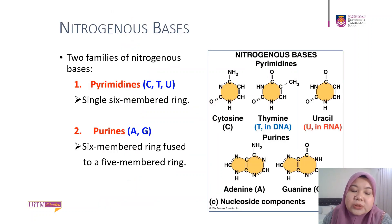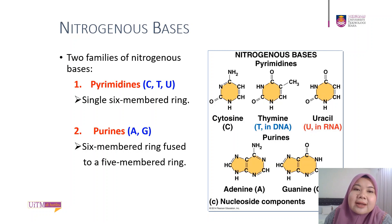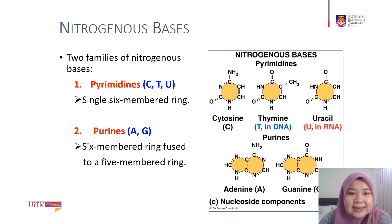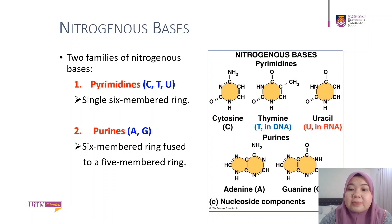Now we're going to look at the nitrogenous bases. We have two families of nitrogenous bases. The first is pyrimidines — a single six-membered ring. The bases under the pyrimidine family are cytosine, thymine, and uracil, or C, T, and U. Thymine can only be found in DNA, and uracil can only be found in RNA. The second family is purines — a six-membered ring fused with a five-membered ring, giving it a double ring structure. We have two bases under purines: adenine and guanine. To summarize: C, T, U are pyrimidines; A and G are purines.